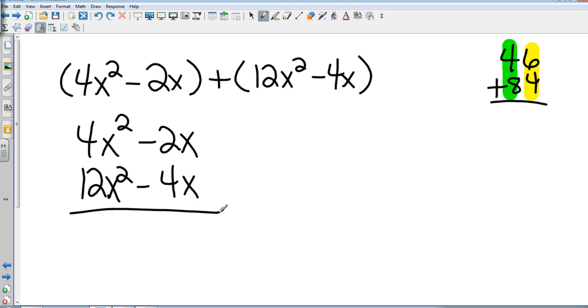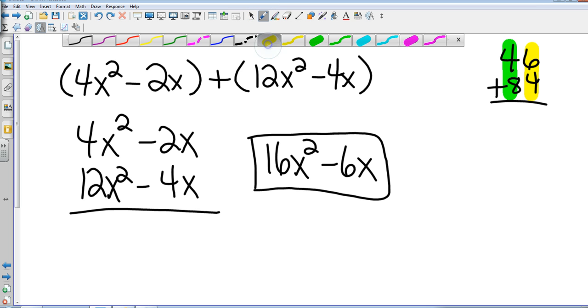And we can just do what it tells us to do. These are both positive so 4x squared plus 12x squared is going to give me 16x squared. Negative 2x minus 4x is going to give me negative 6x. Because x squared and x are different then I can't go any further. I don't have any more like terms.